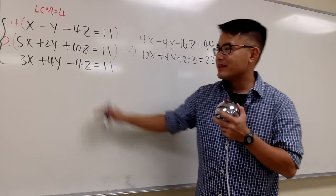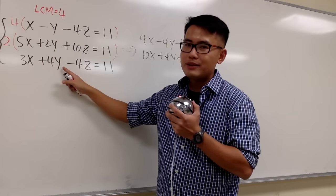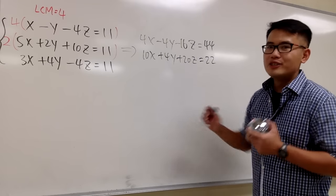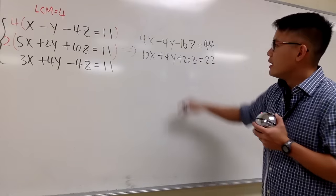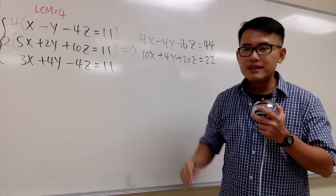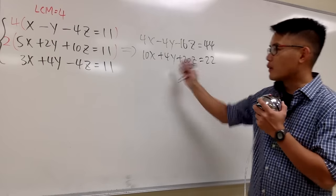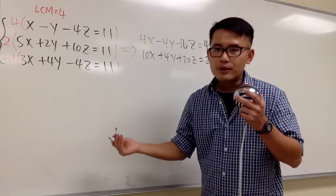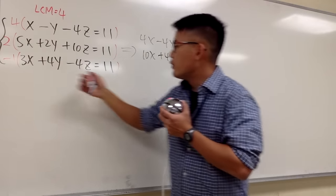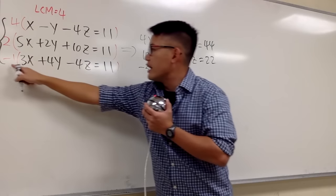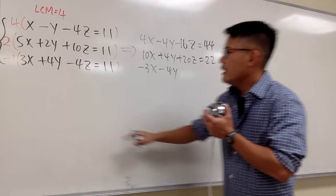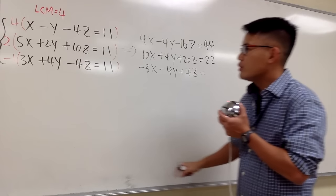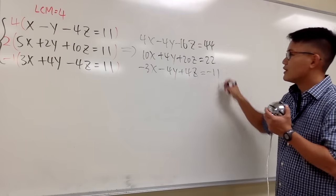Let's look at the third equation. This has a positive 4y, but we had negative 4y, then positive 4y — this right here should be a negative 4y. The numbers should be the same, but the signs have to alternate: negative, positive, negative in our situation. With that being said, we are going to multiply the last equation by negative 1 — in other words, we are just changing the signs. Therefore we will have negative 3x, then negative 4y, and then positive 4z, and this gives us negative 11.